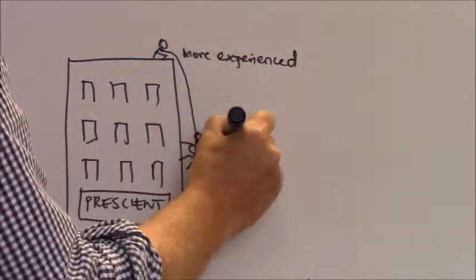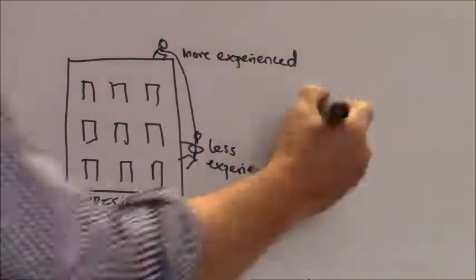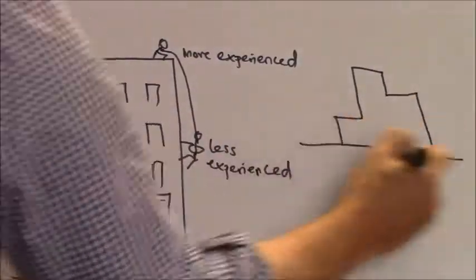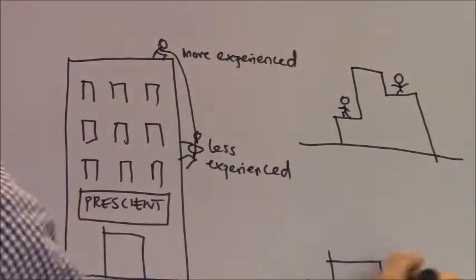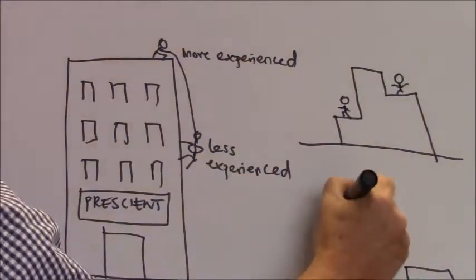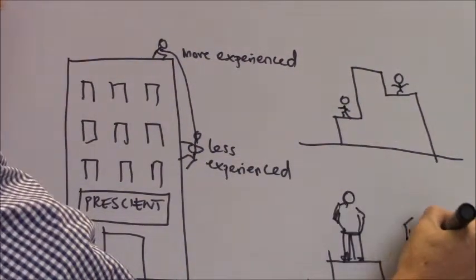Peer mentoring means that this relationship is happening with people at a similar level, for instance two people at associate level. So it's not a direct line management relationship although the outcome in terms of goals and personal development may be very similar.